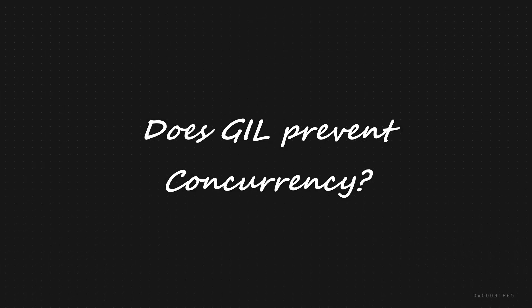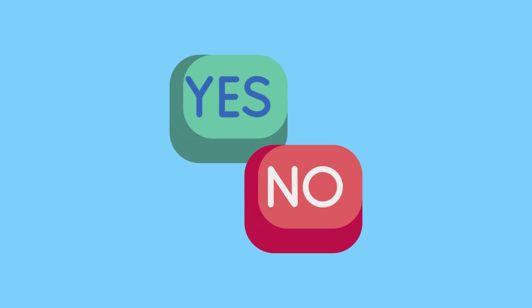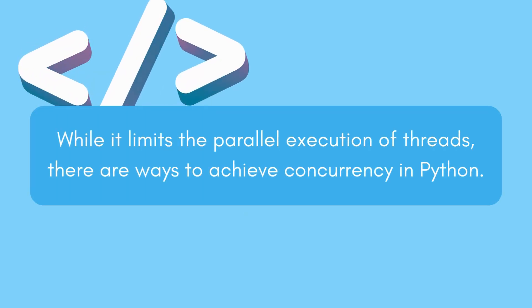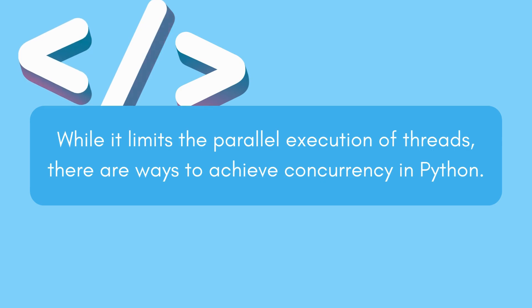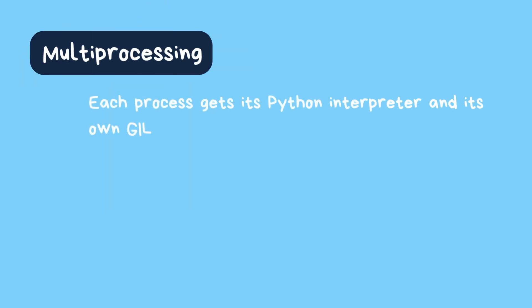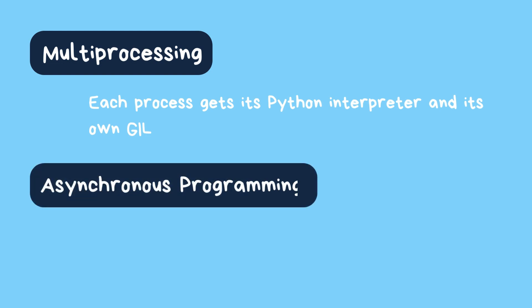Does the GIL prevent concurrency? Yes and no. While it limits the parallel execution of threads, there are ways to achieve concurrency in Python. You can use multiprocessing, where each process gets its own Python interpreter and its own GIL, or explore asynchronous programming for tasks that involve waiting, like IO operations.